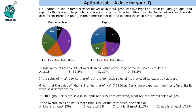Hello everyone, welcome to Aptitude Jab. This is a set based on pie charts. It says that Mr. Shahrat Shukla is a famous sweets maker of Jhwanpur. He produces five types of barfis: Kaukha, Gaukha, Ngam. His barfis are quite popular and are also exported to other cities. So this pie chart shows the domestic sale and the exports — export means the sales in other markets.